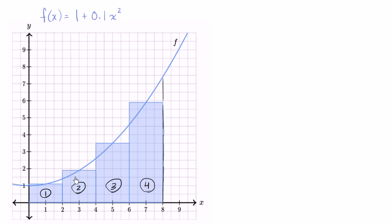Each of their heights — let's see — the interval: it looks like they each have a width of two, so they are equally spaced. We go from zero to eight and split into four sections, so each has a width of two. So that's two, two, two, and two.